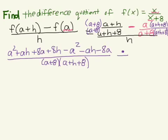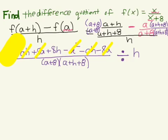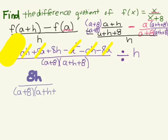This is written using division notation as divided by h. In our numerator, we notice that a squared cancels with negative a squared, 8h cancels with negative 8h, and 8a cancels with negative 8a. What we have left is 8h being divided by a plus 8 times a plus h plus 8.